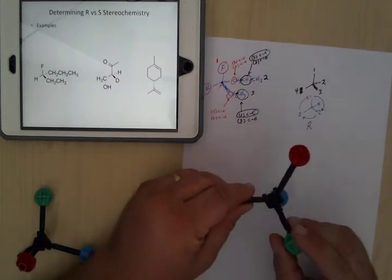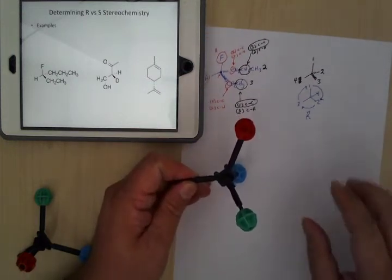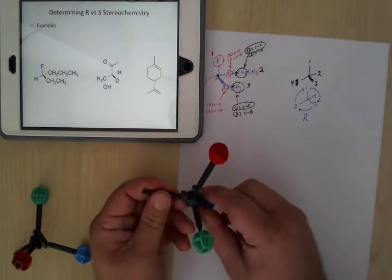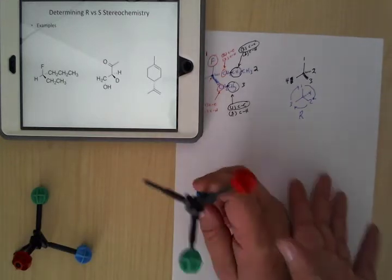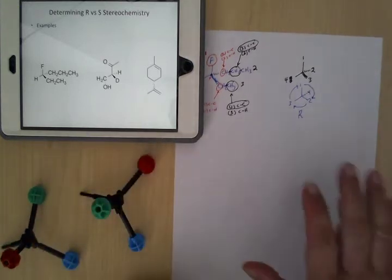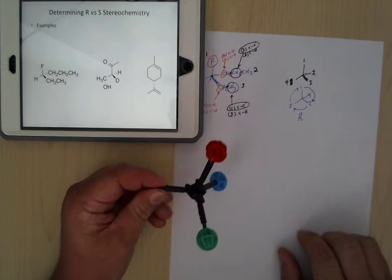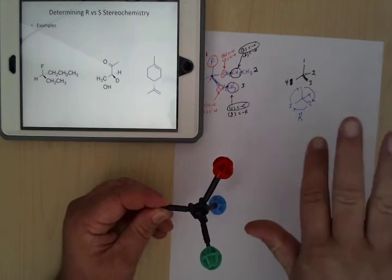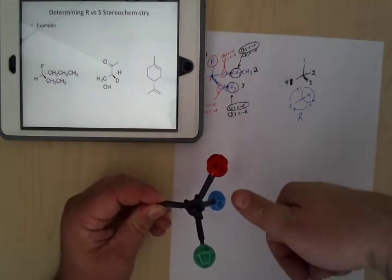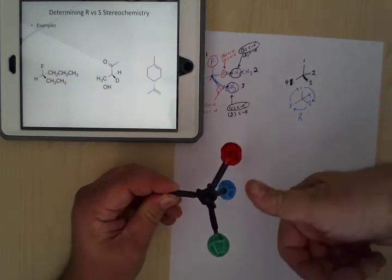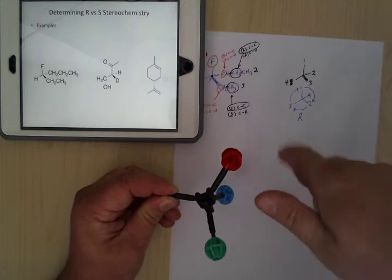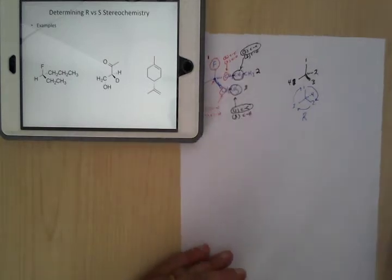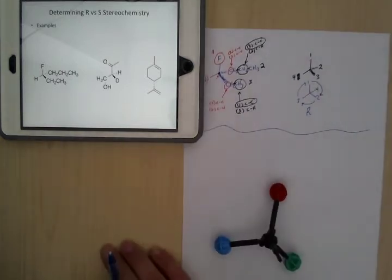Now let's do another example. We have a chiral carbon with a CH3, a CH2-OH group, a deuterium (D), and a hydrogen. The two carbon groups are heaviest — one or two. Hydrogen and deuterium are both types of hydrogens, so they'd be three and four. Since deuterium is heavier than regular hydrogen, deuterium gets higher priority — so deuterium is three, hydrogen is four. Comparing the two carbon groups: the CH2-OH side has two carbon-carbon bonds and two carbon-oxygen bonds, while the CH3 side has only one carbon-carbon bond. Two carbon-oxygen bonds beats one — so CH2-OH is priority two and CH3 is priority one... wait, the group with oxygen is heavier overall.